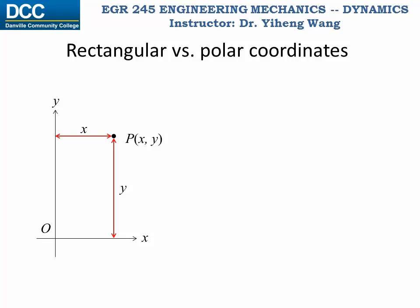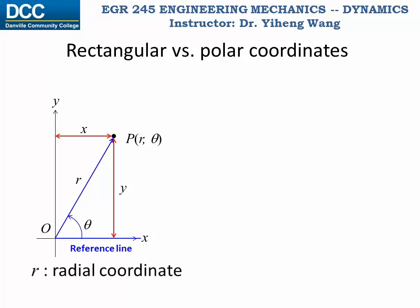This point can also be represented by a pair of different coordinates, r and theta. R represents the distance from the origin to this point, and theta represents the counterclockwise rotation of r relative to a reference line, which is always a fixed line, commonly chosen to be the same line as the x axis. R is known as the radial coordinate, and theta is known as the transverse coordinate.